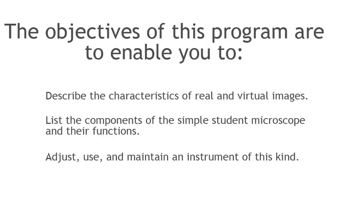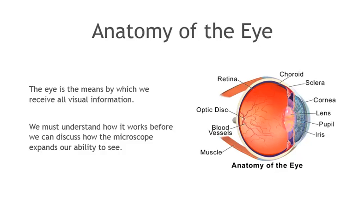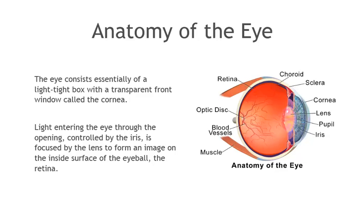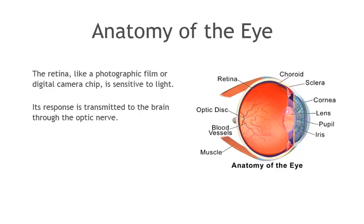The eye is the means by which we receive all visual information. We must understand how it works before we can discuss how the microscope expands our ability to see. The eye consists essentially of a light-tight box with a transparent front window called the cornea. Light entering the eye through the opening controlled by the iris is focused by the lens to form an image on the inside surface of the eyeball, the retina. The retina, like a photographic film or digital camera chip, is sensitive to light. Its response is transmitted to the brain through the optic nerve.